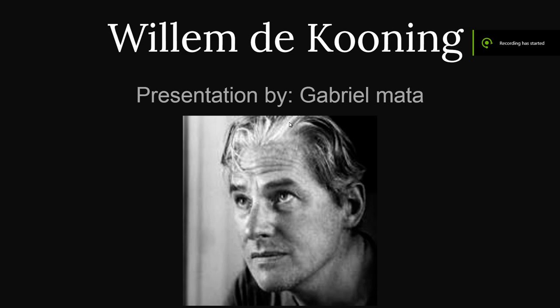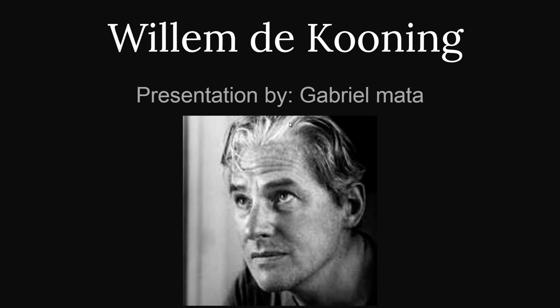Willem de Kooning was a Dutch-American artist. He was born in Rotterdam and moved to the United States in 1926, then became an American citizen in 1962. De Kooning's parents divorced when he was a young boy, and this had a mental impact on him from a young age.